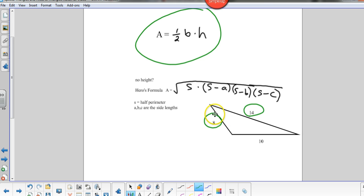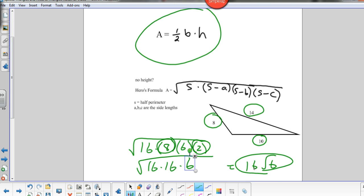So the perimeter is 32, so the half perimeter would be 16. So we've got the half perimeter 16, times 16. S minus A would be 16 minus 8 or 8. S minus B would be 16 minus 10 or 6. And S minus C would be 16 minus 14 or 2. So if we multiply these together, it looks like we're going to get 16 times 16 times 6. So this looks like it's going to be 16 root 6. And that would be my area of that triangle.